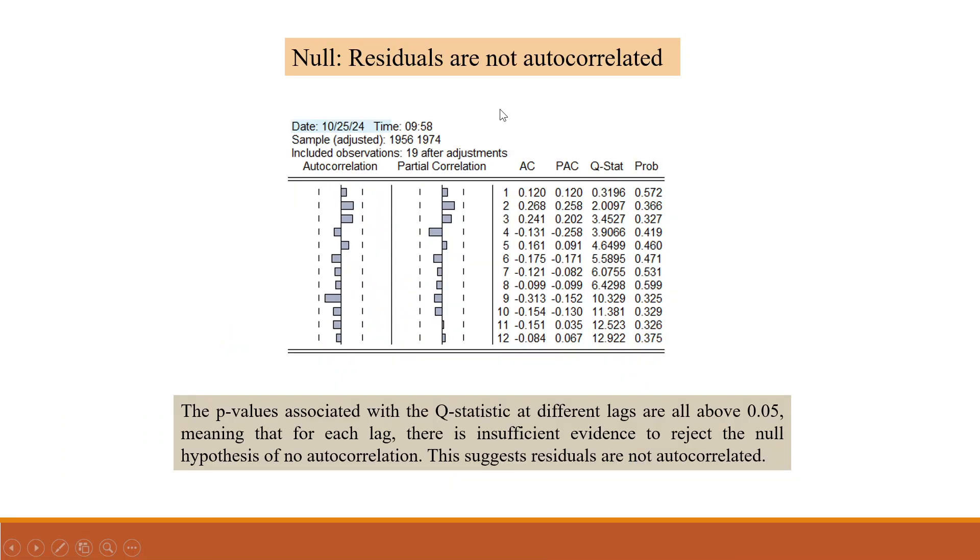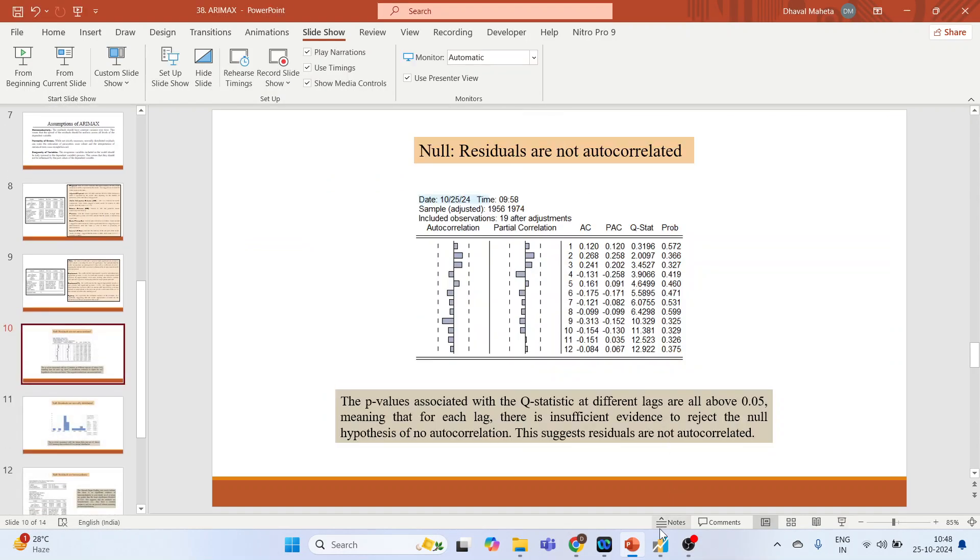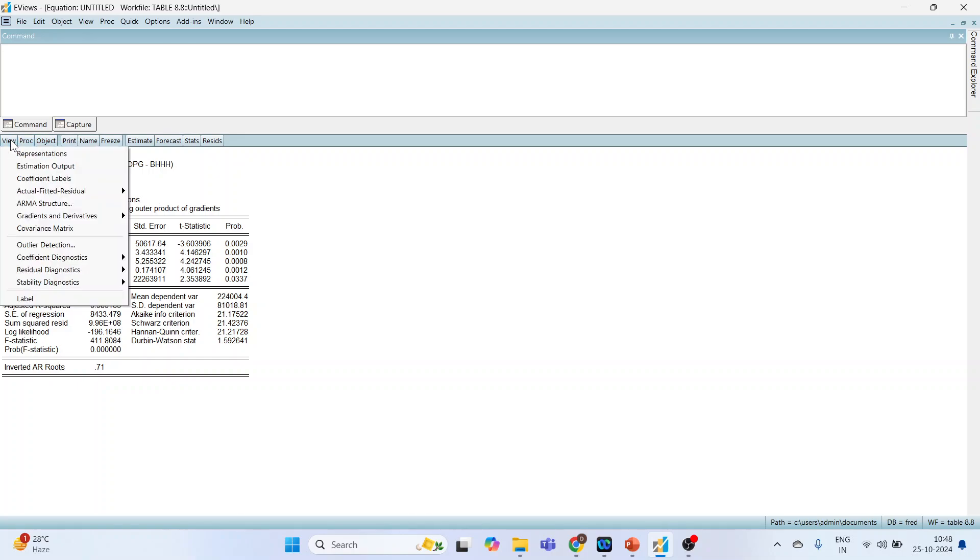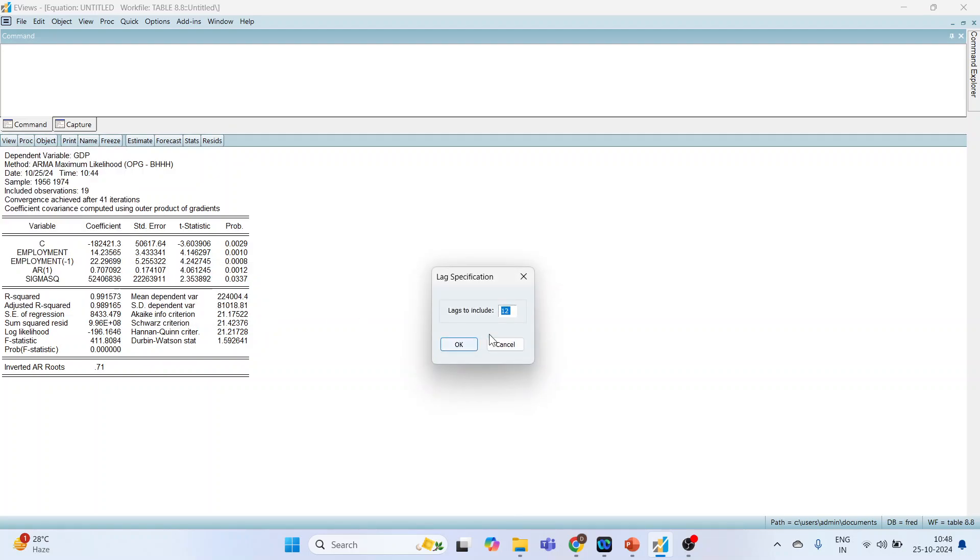Now let's do the testing for the residuals. So again I will go in eViews. View, Residual Diagnostics, Correlogram Squared Residuals. Lags included are 12. Click OK.